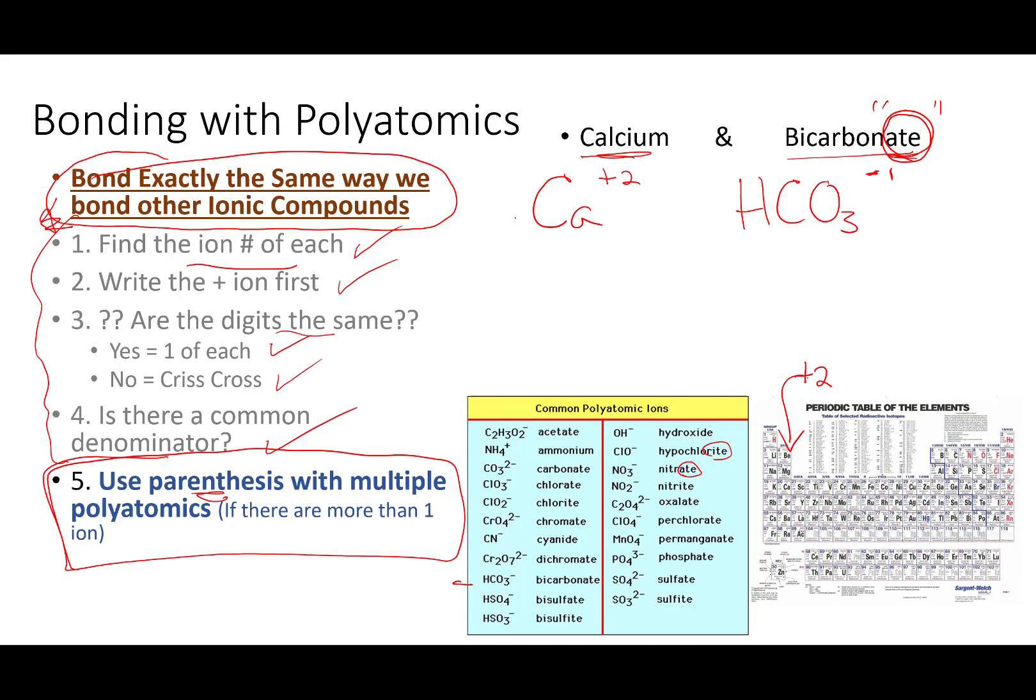So, write the positive one first. We did that. Then, are the digits the same? They're not. This is a two. This is a one. If they're not the same, we crisscross. This goes here, and that goes there. So, calcium, we never write one as a subscript, so we're not putting anything there. HCO3, all of this is the bicarbonate ion, and then the two comes down.